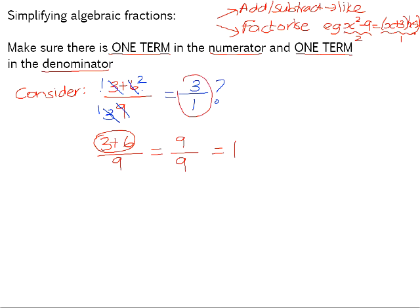You can very clearly see that you are not getting the same value. And what you can conclude from that is that this method here is completely incorrect. You may not simplify when you have got two terms in the numerator. You can only simplify when you have one term in the numerator and one term in the denominator.